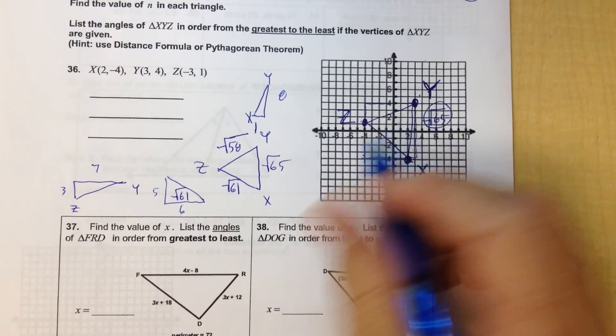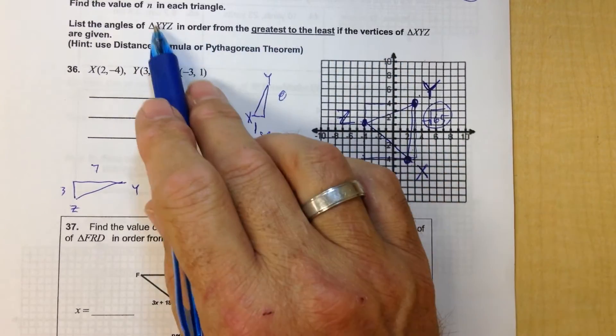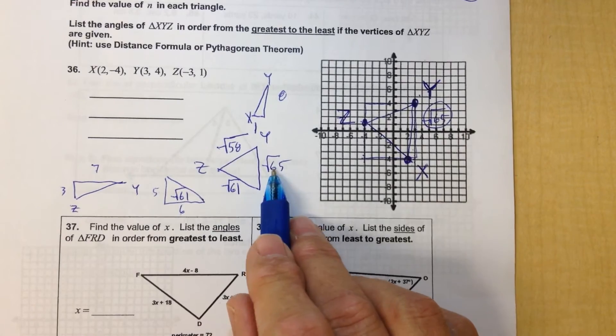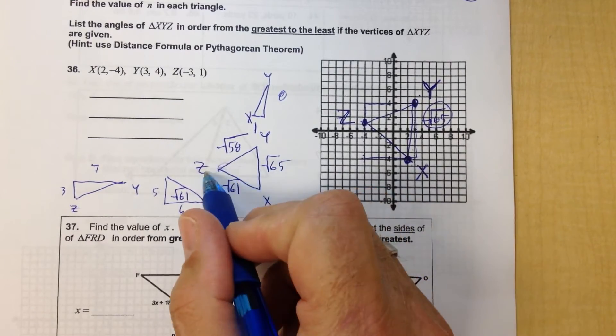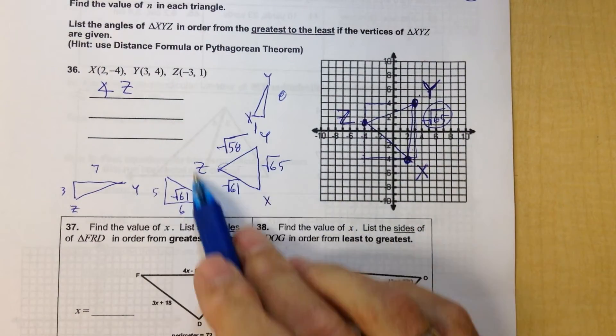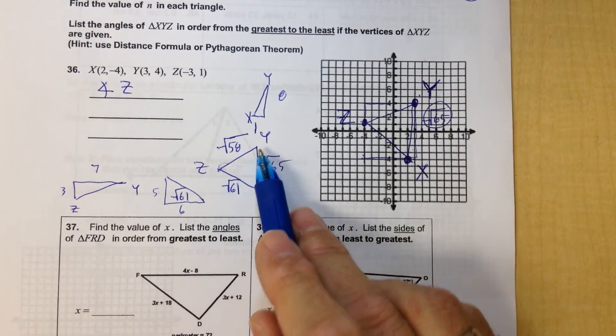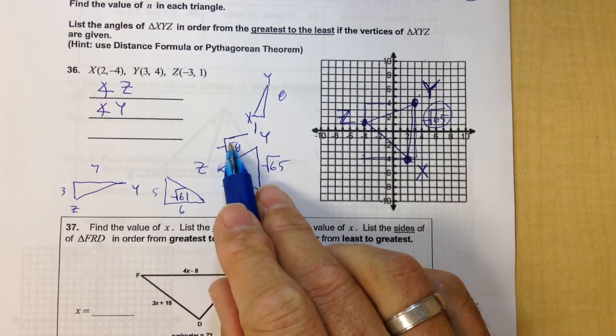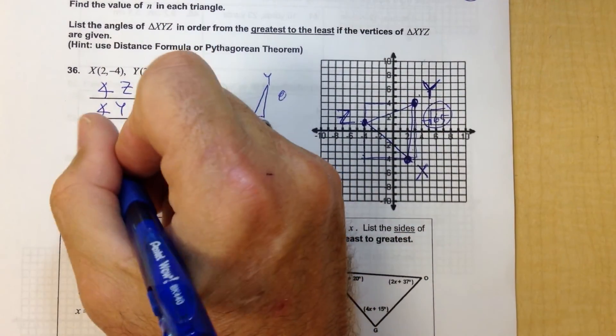Okay, so the largest square root, we want to put the angles in order. The largest square root is 65, the side across from it is Z. So angle Z is the largest. The next largest square root is 61, across from it is Y. And the smallest angle is going to be the square root of 58, which matches up to the angle X.